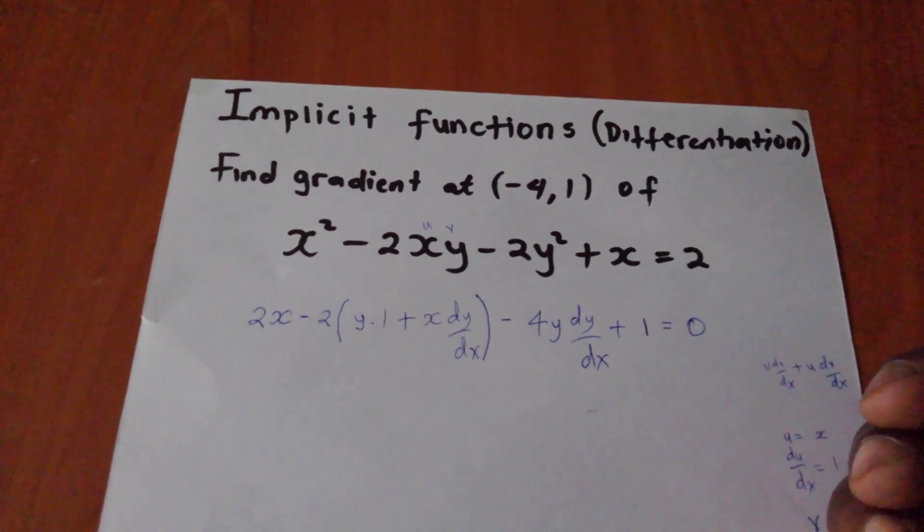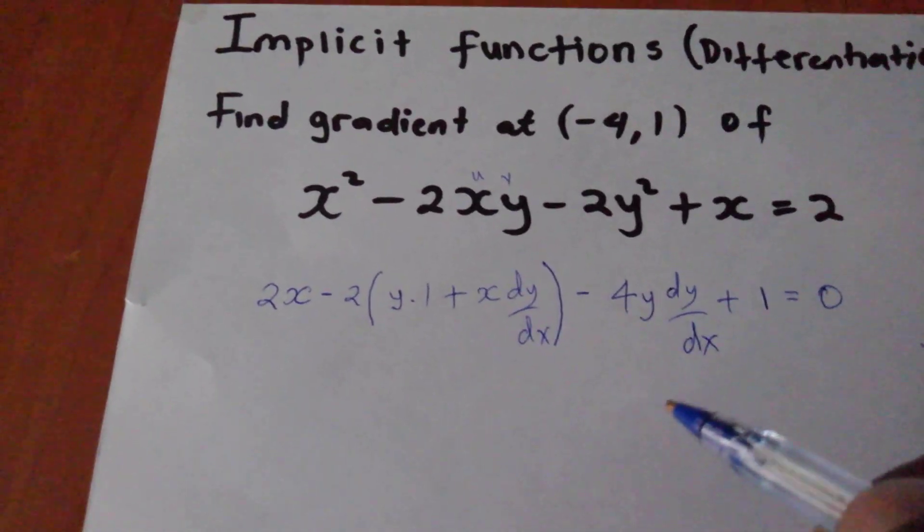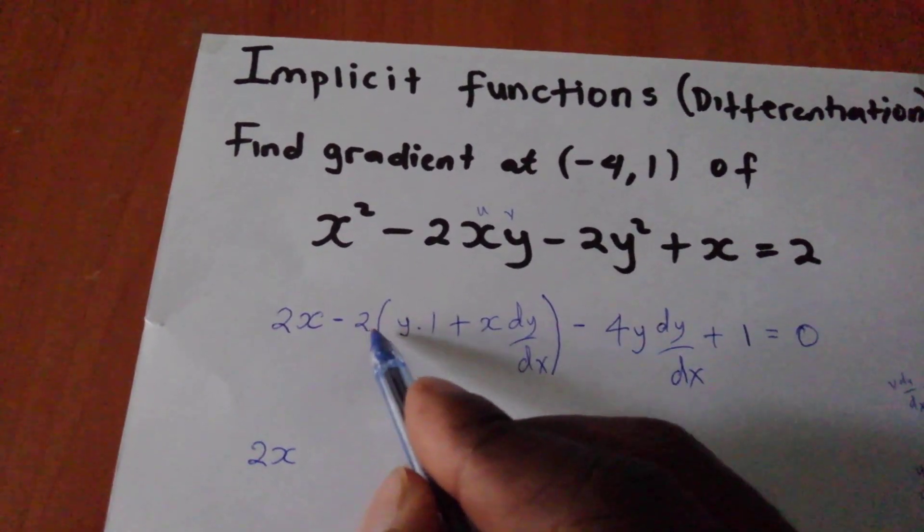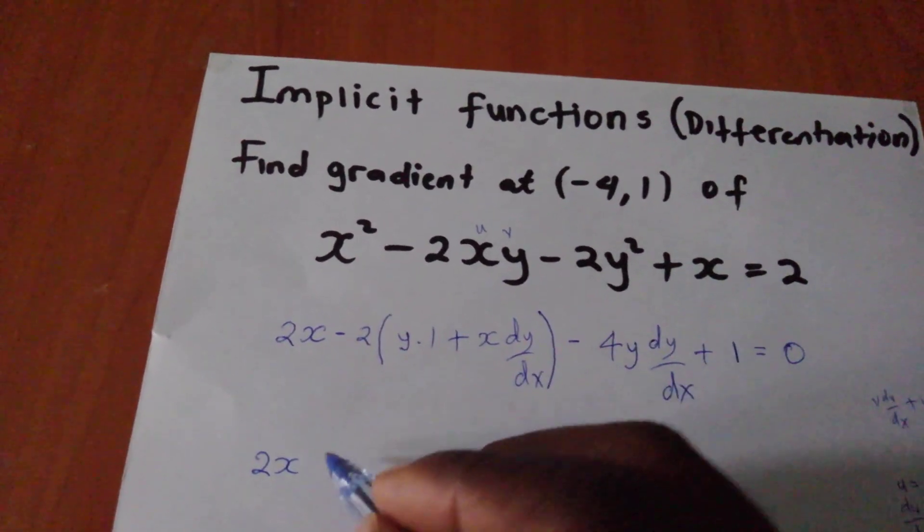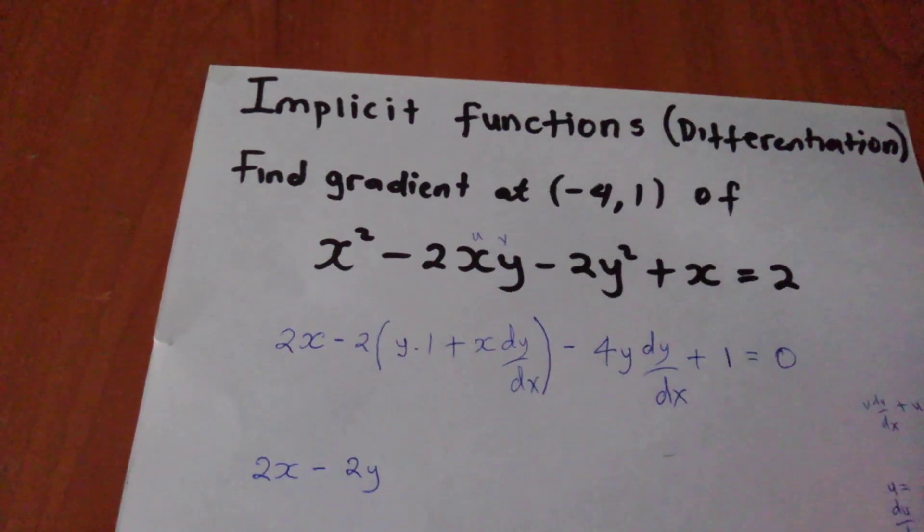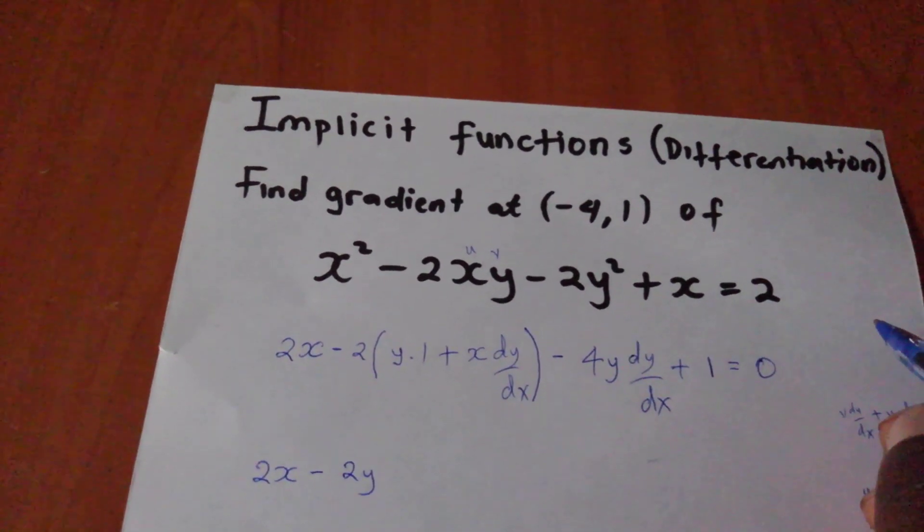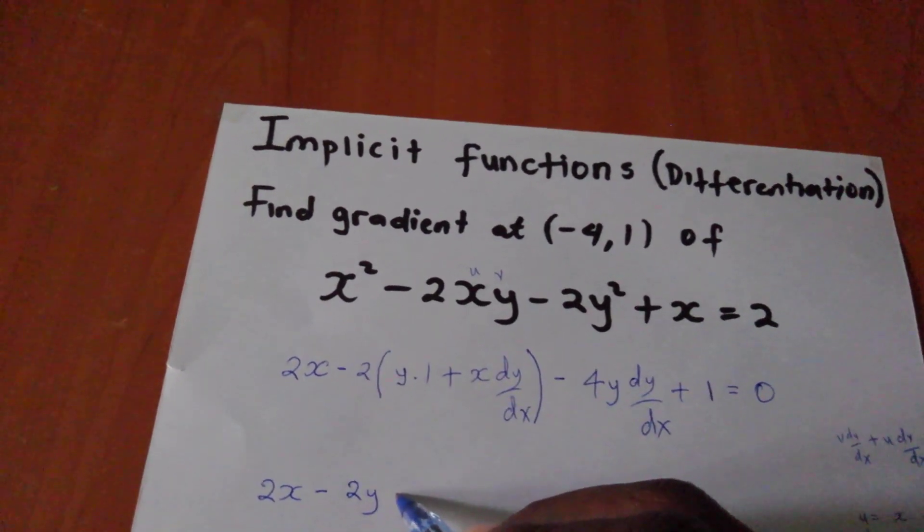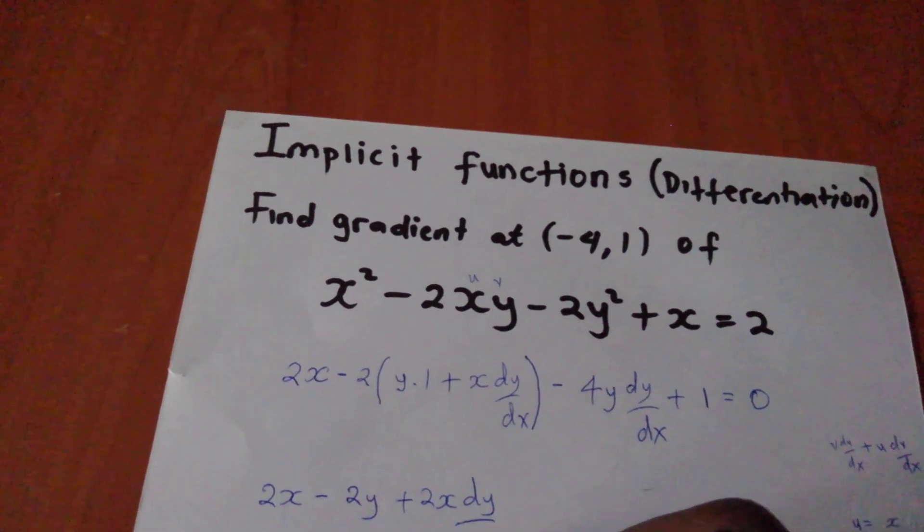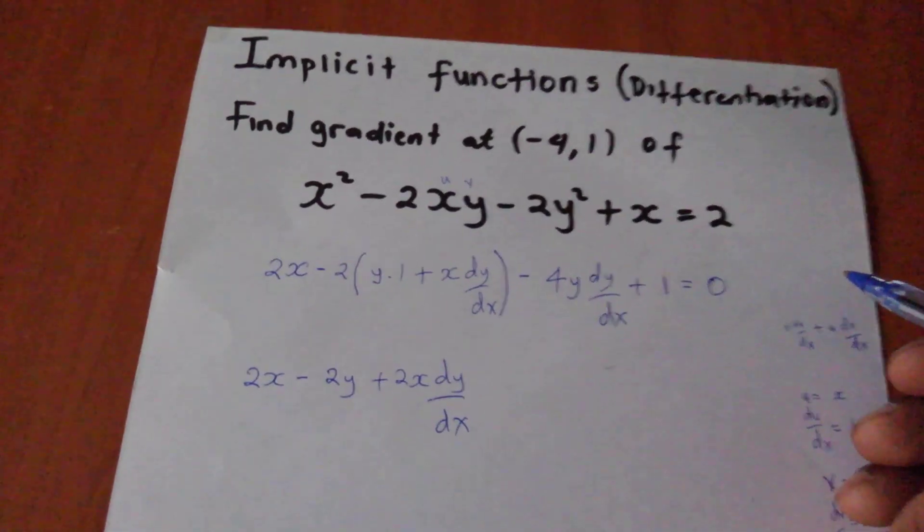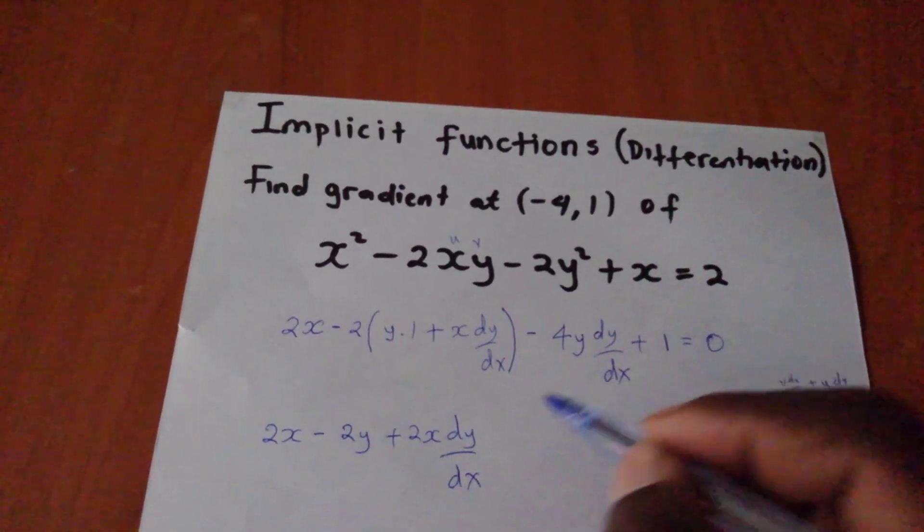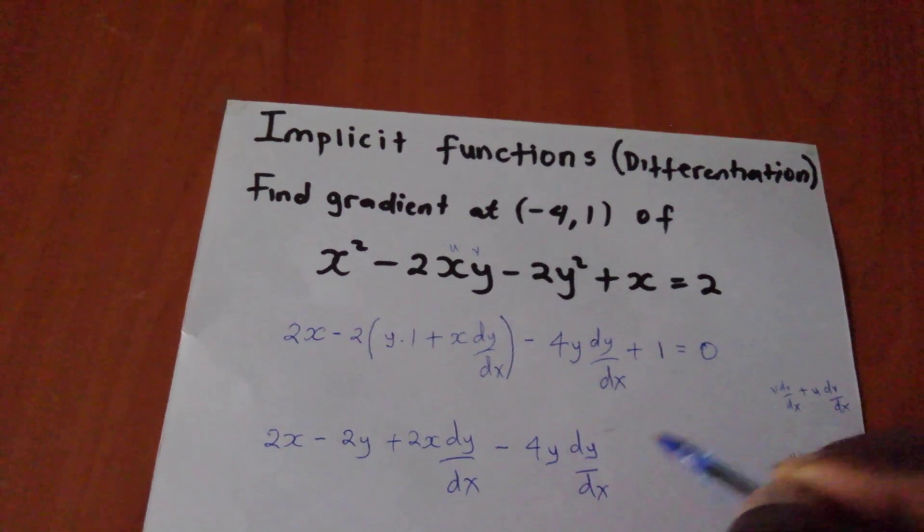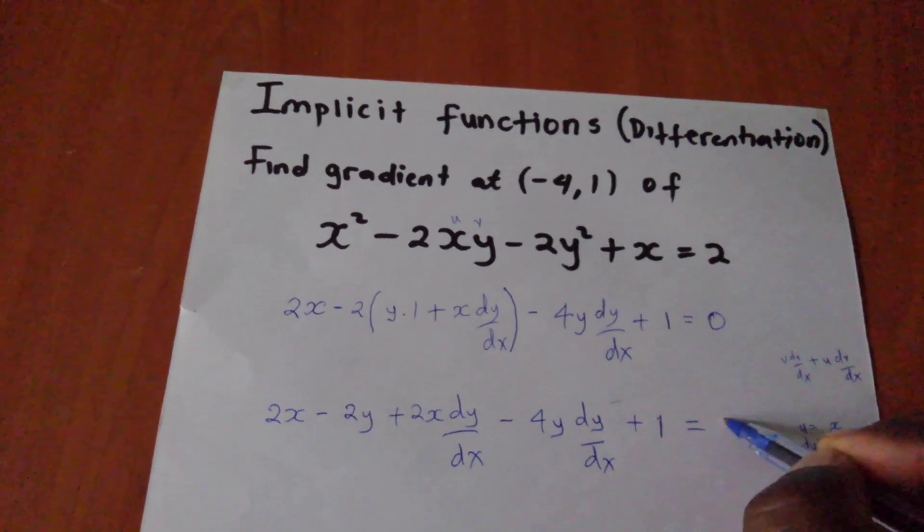So I will try to elucidate on this. I will get 2x. Then I have to make this 2 enter in here. So I will have minus 2y. I hope you are getting me. 2y plus 2x dy dx. I hope we are together. minus 4y dy dx plus 1 equals to 0.